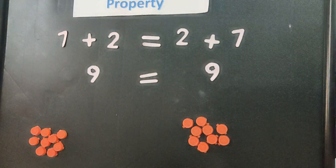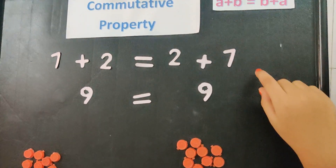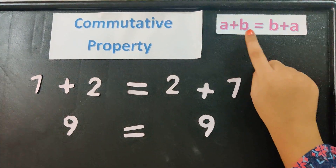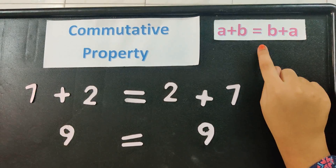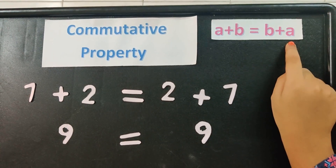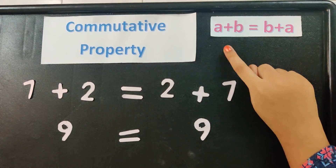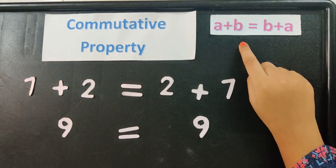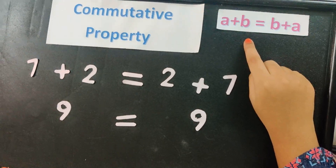Generally, commutative property is: A plus B is equal to B plus A, where A and B are any numbers.